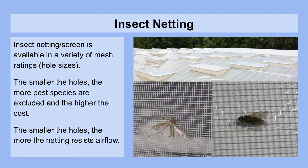Insect netting, or screens, are available in a variety of mesh ratings. The smaller the holes, the fewer insects can get through and the higher the cost of the mesh. With smaller holes, the resistance to airflow is also higher. So you have to make sure that this trade-off is not causing you issues when excluding pests results in excluding some of the natural ventilation that would occur through these screens.